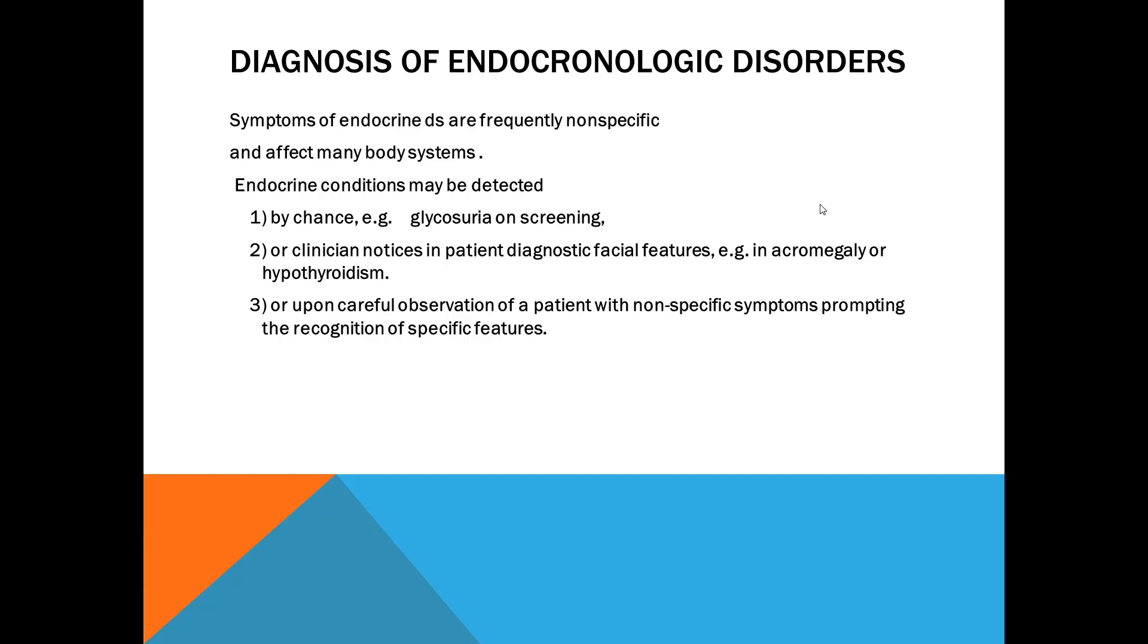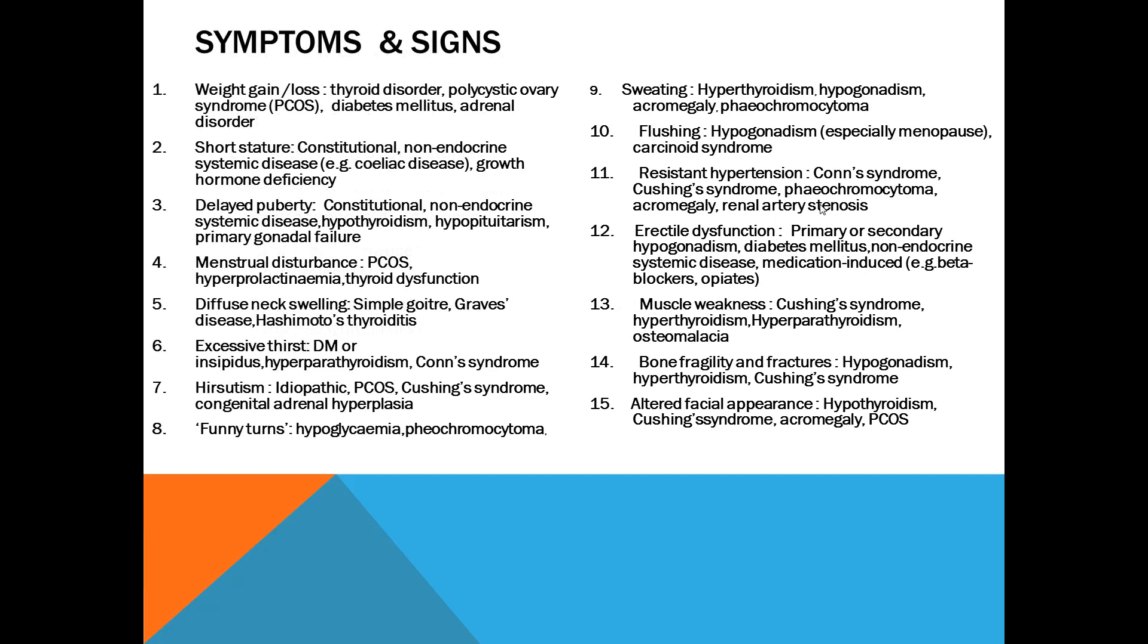How do you diagnose endocrinological disorders? By chance—first is by chance. People get shocked when they go to a camp for checkup. On screening, sugar is found in the urine, random blood sugar can be raised, fasting can be raised. So you find out you have diabetes. So by chance. Or clinician notices in a patient certain very diagnostic facial features like acromegaly, hypothyroid, Cushing syndrome. Just by looking at the face, you know something is wrong. Or third is a very good doctor who has studied endocrinology very well. He has non-specific symptoms, he puts them together and he arrives at the diagnosis. So that is a good clinician who can put a picture together from non-specific symptoms.